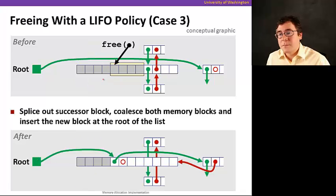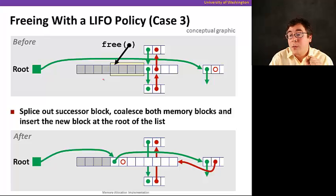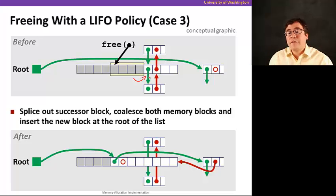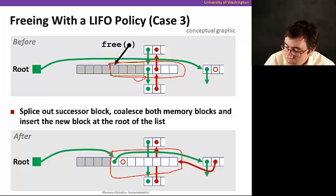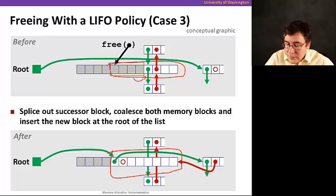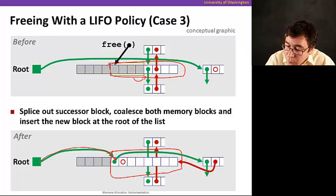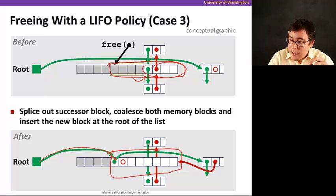The third case is freeing a block that has a free block right after it. We do the same — merge into a larger block and update the links so the root now points to this newly formed larger block. We remove the older block since it's part of the larger one now, and update the pointers accordingly.